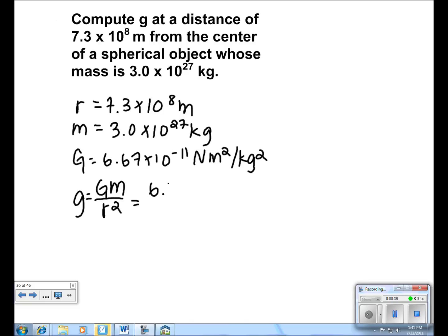We plug in the numbers and we get 6.67 times 10 to the negative 11 times 3 times 10 to the 27 all over 7.3 times 10 to the 8th squared. We get the answer of 0.38 meters per second squared.